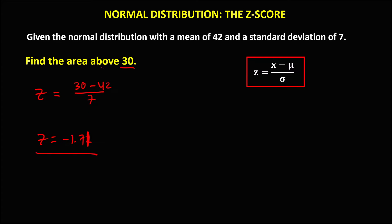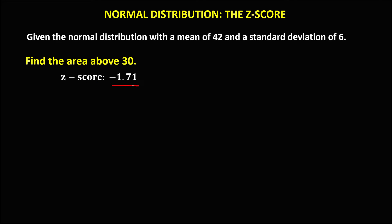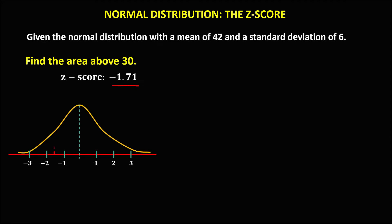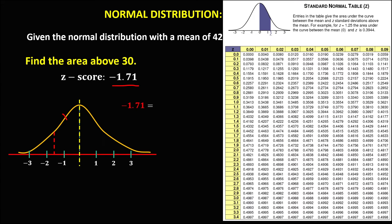To find the area above negative 1.71, in a normal curve let's place this at negative 1.71. For Z = negative 1.71, just ignore the negative — look up row 1.7, column 0.01. The area is 0.4564.